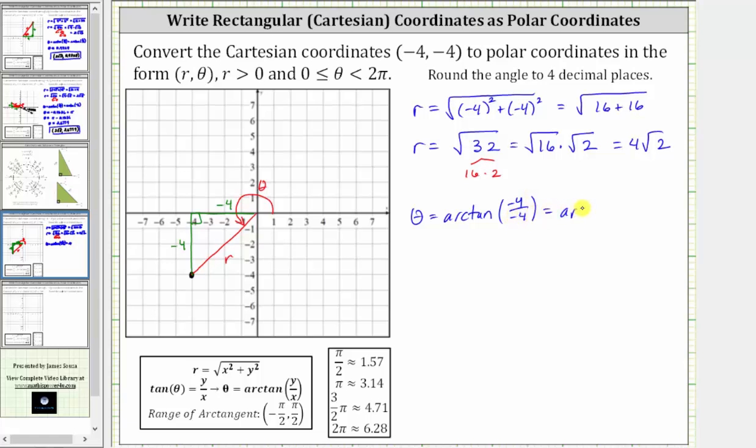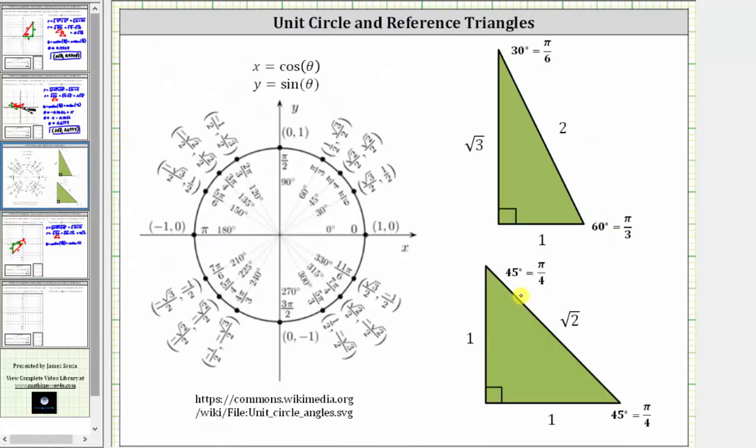Simplifying, we have arctangent of one. And we should be able to recognize an angle that has a tangent function value of one. This should remind us of a 45-45-90 reference triangle,